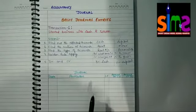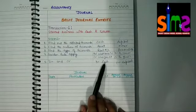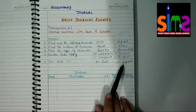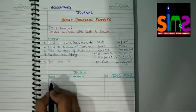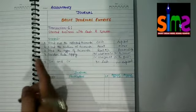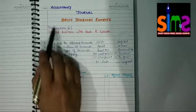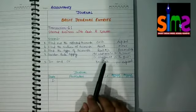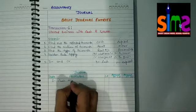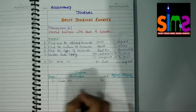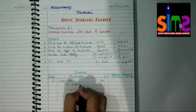Now, pass the journal entry for this transaction. Cash will be debit and capital will be credit. In the journal, we mention the date — as I have not mentioned the date, I am using serial number 1 for transaction 1. Cash account is debit, so we write: Cash Account debit to Capital Account. The amount of the debit will be written in the debit column and the amount of credit in the credit column — rupees five lakh.